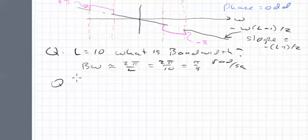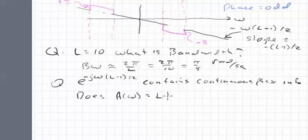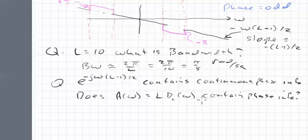Another question. E to the minus j omega L minus 1 over 2 clearly contains a lot of phase information. It contains what we call the continuous phase info. That was a straight line. So it clearly contains the phase information. So the question is, does A of omega, which is equal to L times the Dirichlet function, does it contain phase info? And the answer should be pretty obvious by now that the answer is yes.